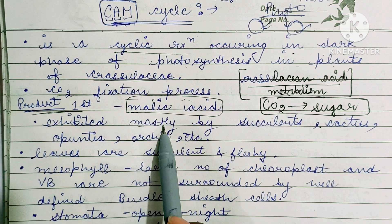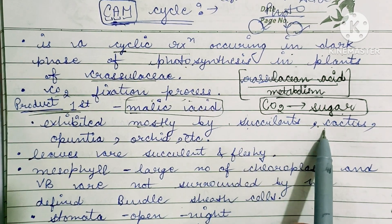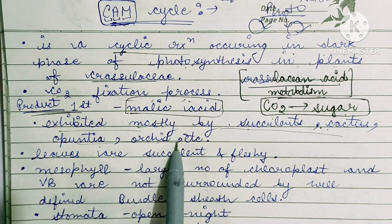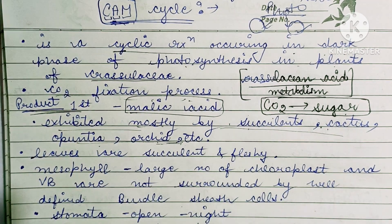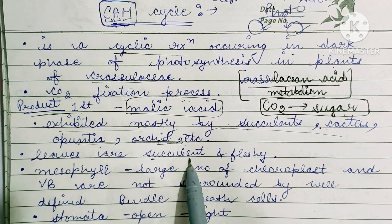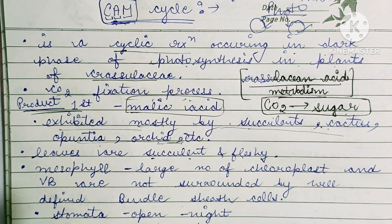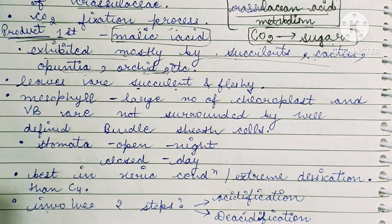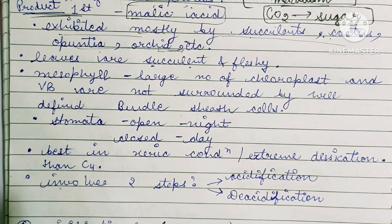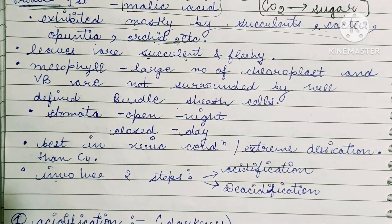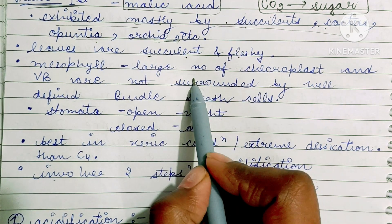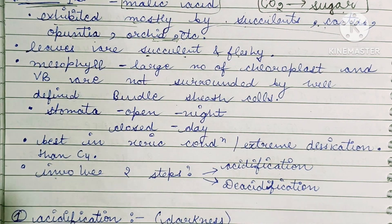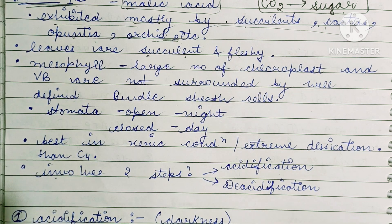This cycle is exhibited mostly by succulents, cactus, and orchids. These plants have succulent and fleshy leaves. These are mesophylls, and these mesophylls have a lot of chloroplasts and vascular bundles. However, these chloroplasts and vascular bundles are not surrounded by bundle cells.